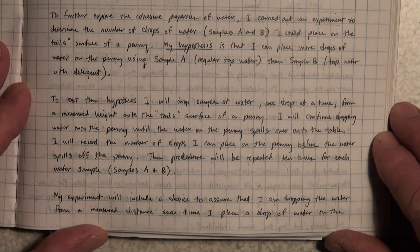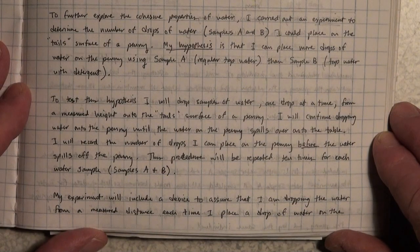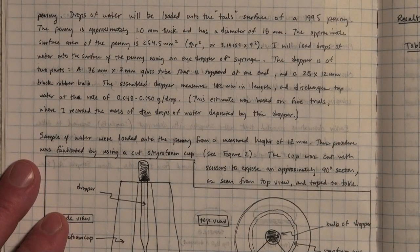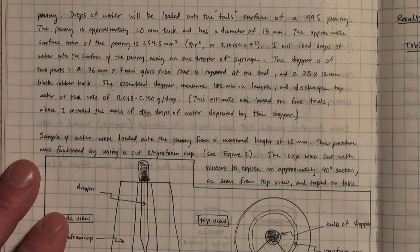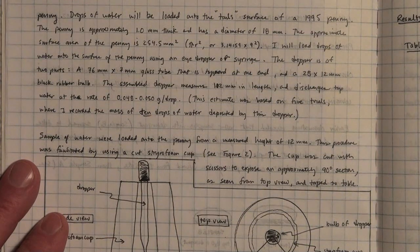The samples A and B in my experiment will include a device to ensure that I am dropping the water from a measured distance each time I place a drop of water on the surface of the penny.